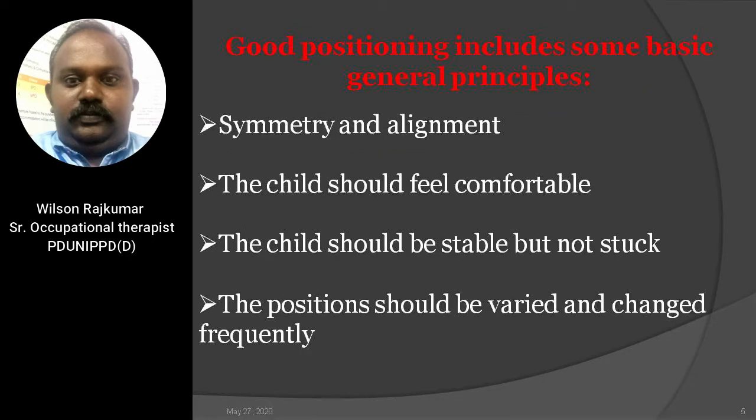Some basic principles of good positioning include: symmetry and alignment should be respected as much as possible in all positions. The child should feel comfortable — if the child continues to show discomfort, he may require tone normalization or positional adjustment. Parents should be discouraged from forcing the child into a position. The position should enable the child to experience more normal movement patterns, for example, good proximal trunk stability in sitting promotes selective upper extremity movements for playing, writing, and eating. The position should be varied and changed frequently to prevent pressure areas, stiffness, and contracture.